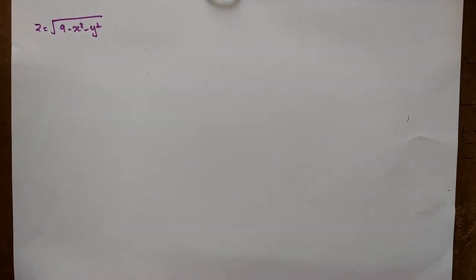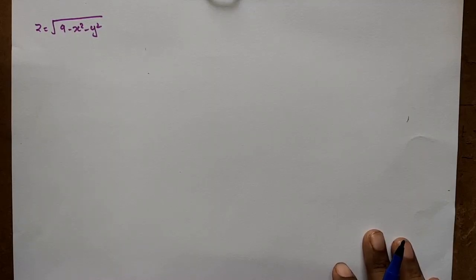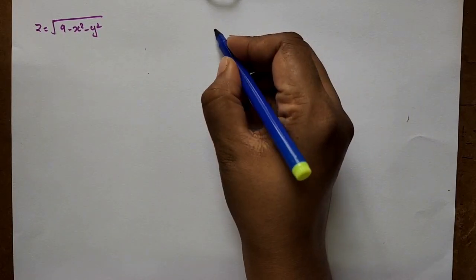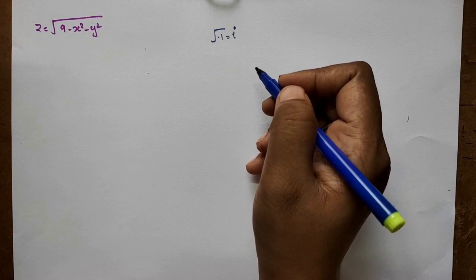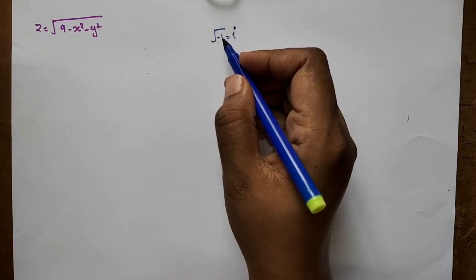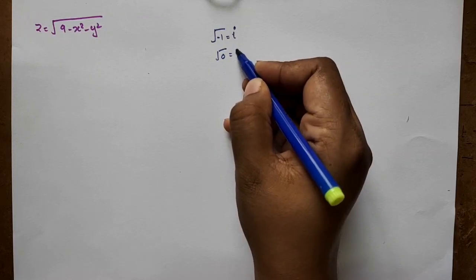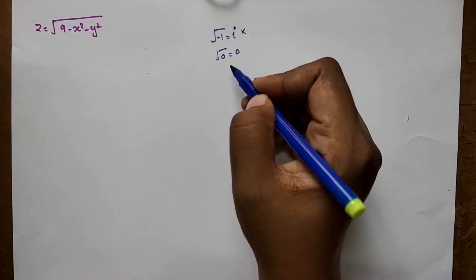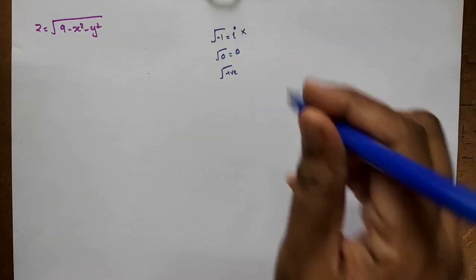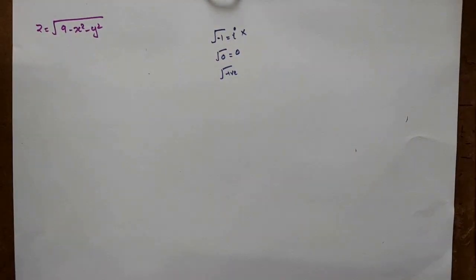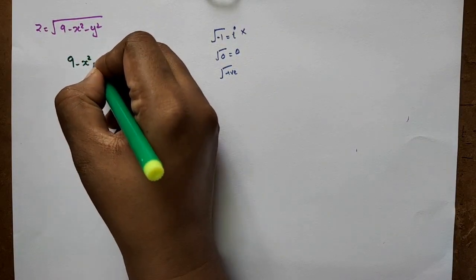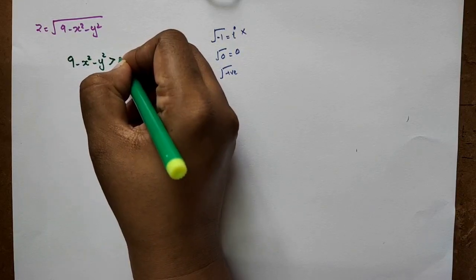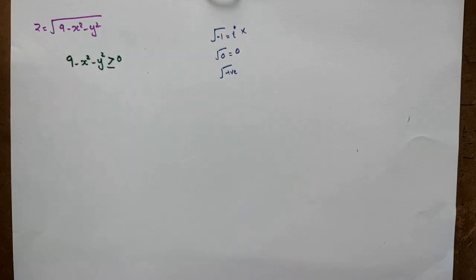Now: z = √(9 − x² − y²). For the square root to be defined, the value inside must be greater than or equal to 0. So we need 9 − x² − y² ≥ 0, which means x² + y² ≤ 9.